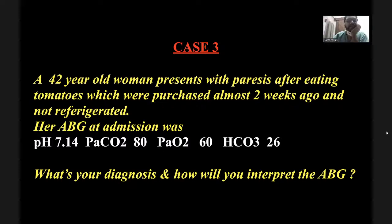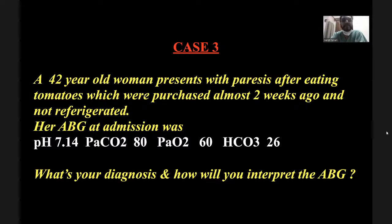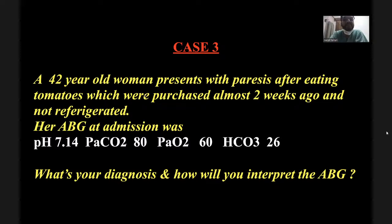This is a classic case of botulism — lab proven. Botulism causes descending paralysis, starting from the head down, and causes acute respiratory failure. The pH is 7.14 — acidic — and expected CO2 should be 14 but it is very high at 80, confirming acute respiratory acidosis. For 40 rise in CO2 from baseline 40, expected bicarb should rise to 28 from 24. But bicarb is 26, so something is making bicarb come down — indicating a metabolic acidosis component, likely lactic acidosis.